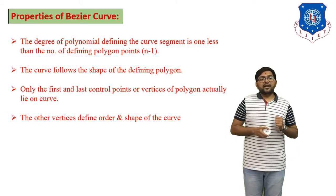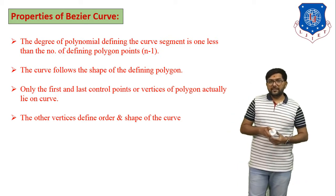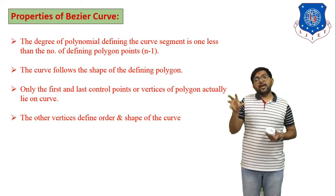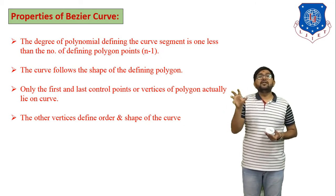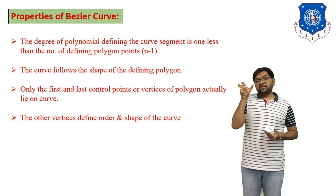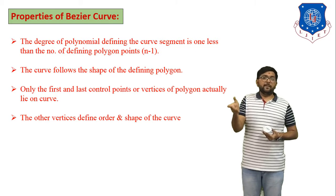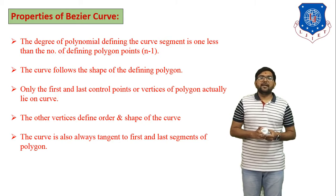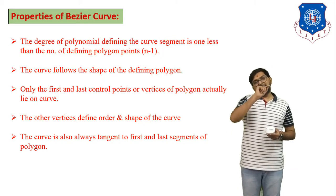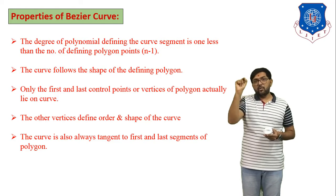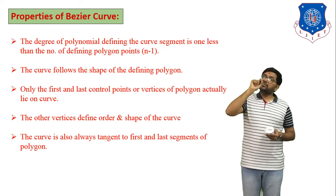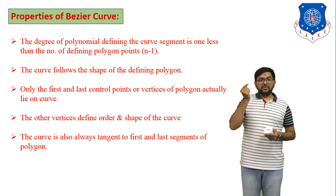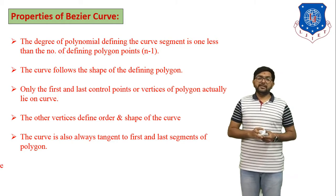Fourth property: the other (intermediate) vertices define the order and shape of the curve. If you have 6 control points, the equation is 5th order — so control points define the order of the equation. Fifth property: the curve is always tangent to the first and last segment of the defining polygon, meaning the Bezier curve has a tangent vector at both the starting and ending points.